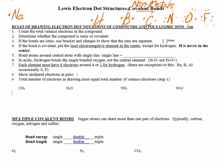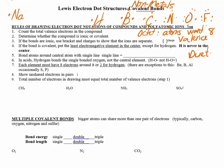We're not going to worry about noble gases because they don't participate in bonding. There's the octet rule — atoms want to have eight valence electrons around them. Hydrogen, however, follows the duet rule, meaning hydrogen can only have two electrons around it. Please remember that.